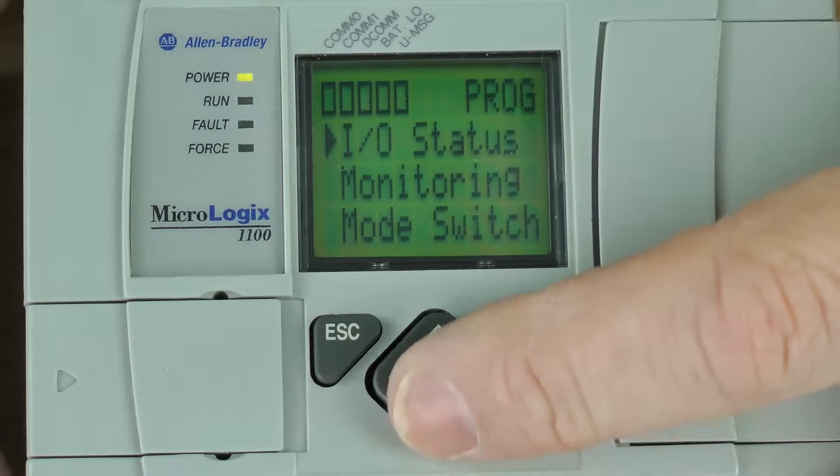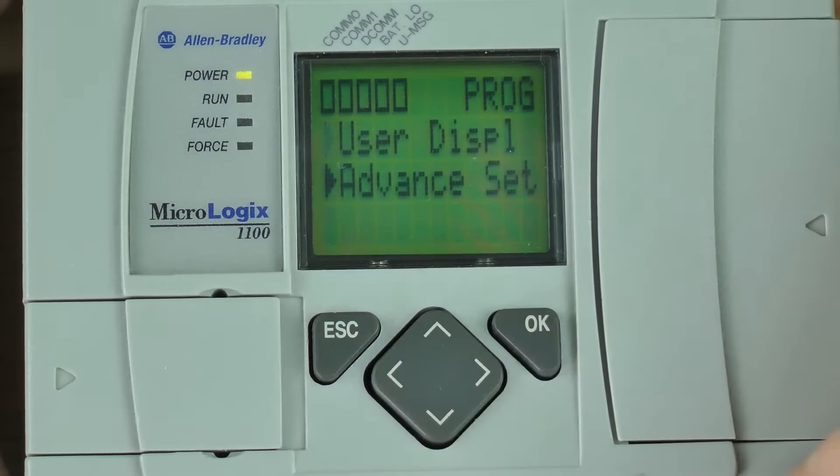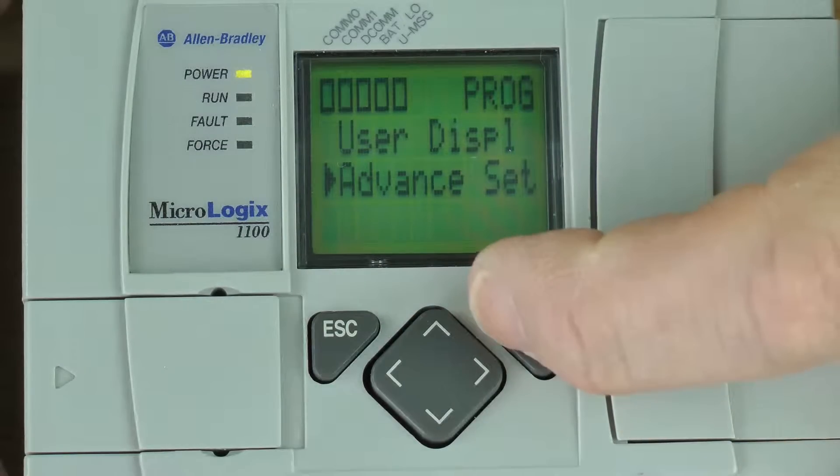the first thing I'm going to have to do is press the down arrow button four times to select advanced set and press the okay button.